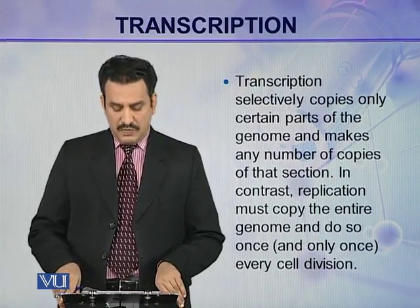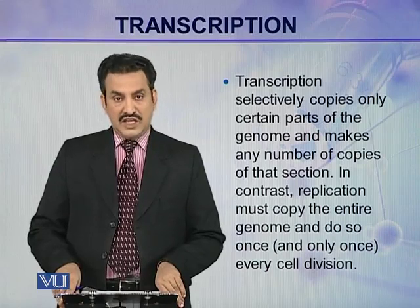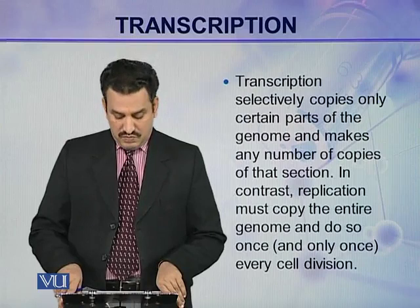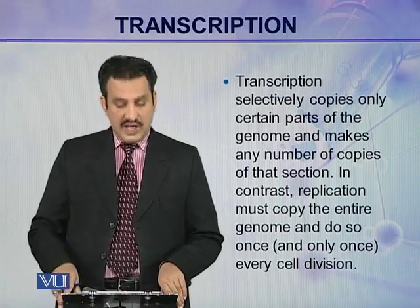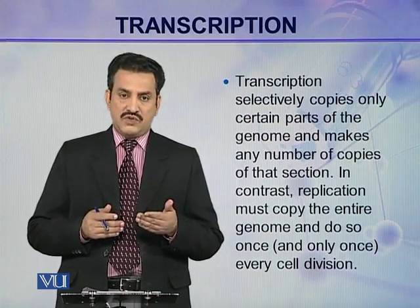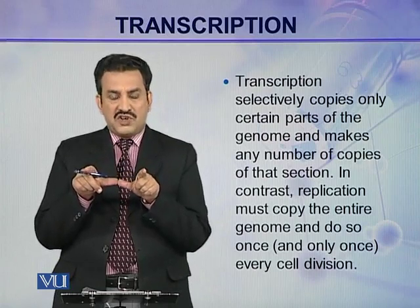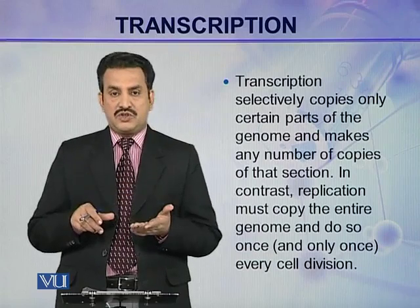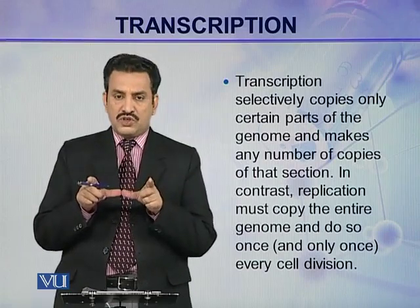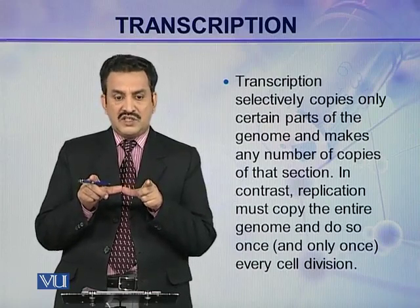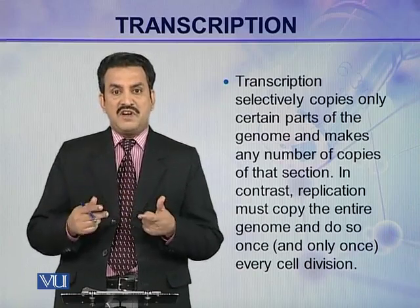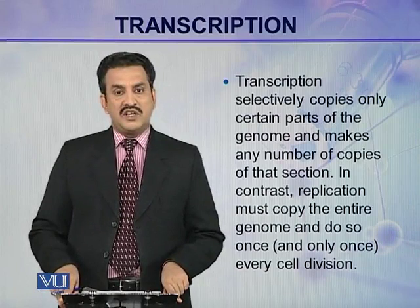Transcription selectively copies only certain parts of the genome and can make any number of copies of that section. In contrast, replication must copy the entire genome, and do so once and only once every cell division. When transcription is taking place, only some specific portion of the DNA is transcribed — the portion which is going to be expressed. Not all of the genome is expressed at the same time; only some genes or portions of DNA are expressed. That specific portion is copied in the form of mRNA, and several mRNA molecules can be synthesized from it.